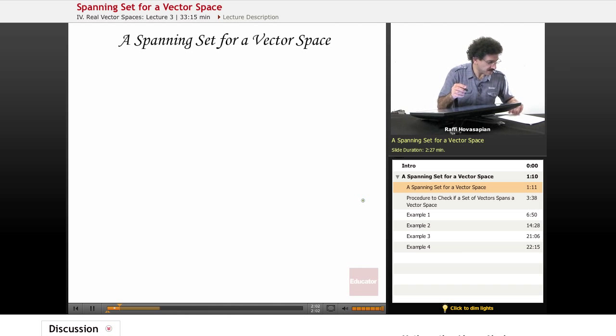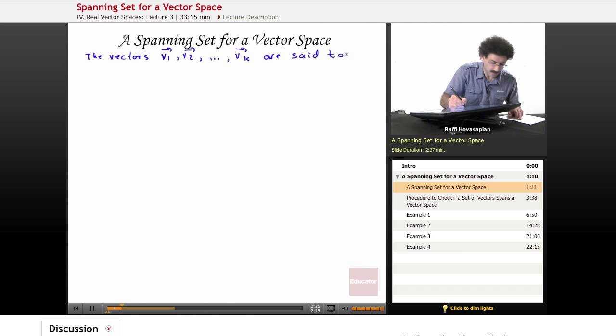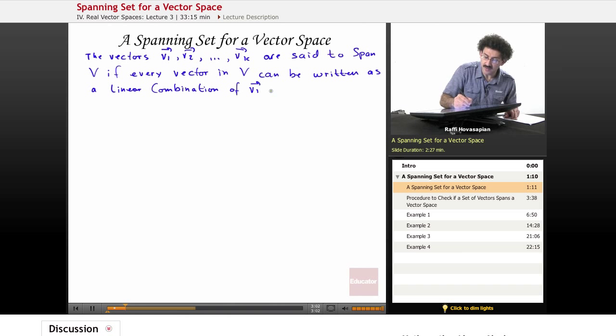So let's actually write our definitions down. The vectors v1, v2, and so forth onto vk are set to span V, which is our vector space, if every vector in V can be written as a linear combination of the v1, v2, v3.